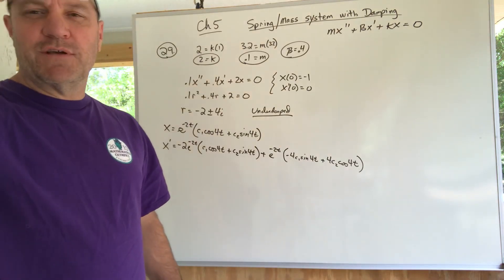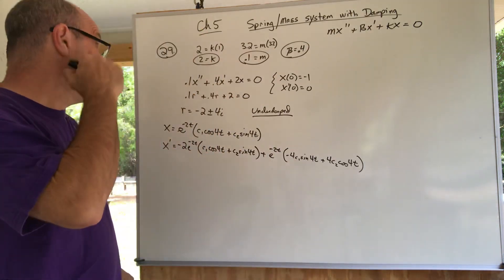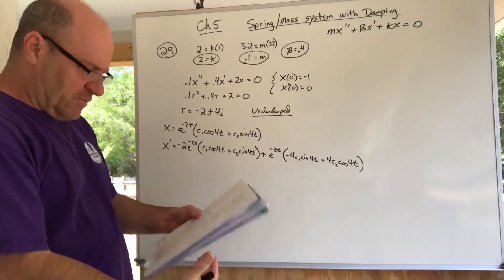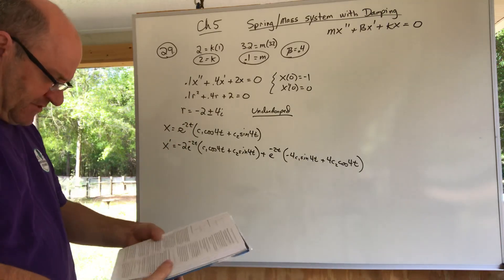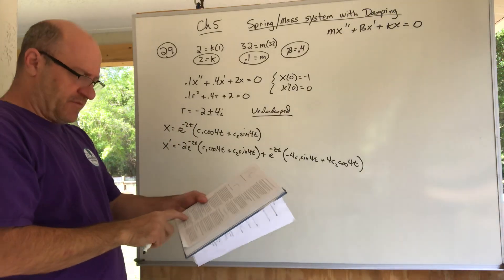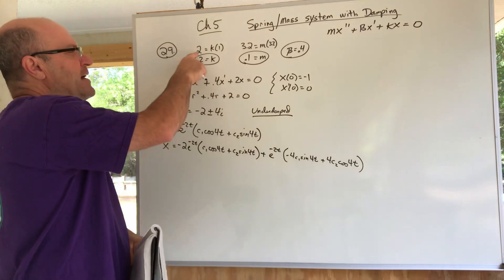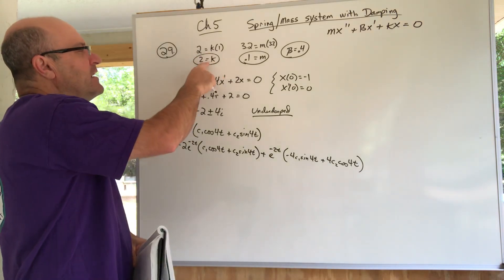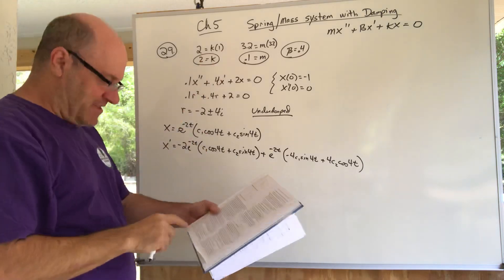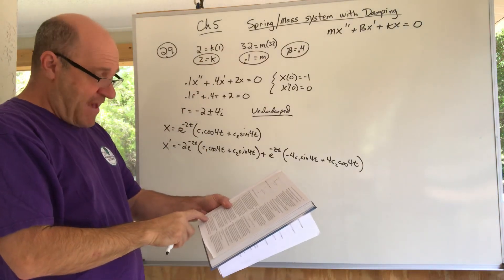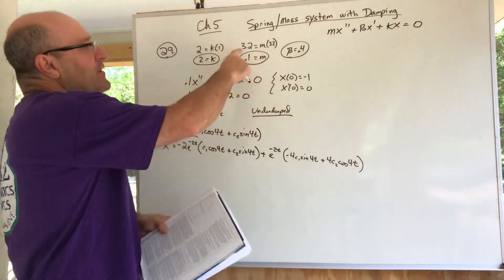Welcome back — here comes another damping problem from chapter five, number 29. It says: a force of two pounds stretches a spring one foot. Now they change the poundage and say a mass weighing 3.2 pounds is attached to the spring.